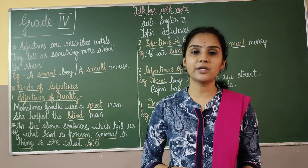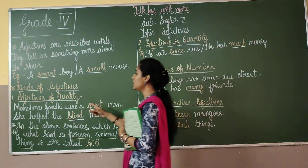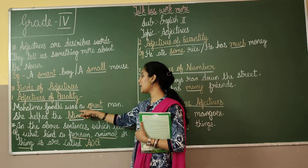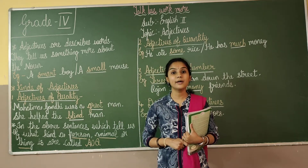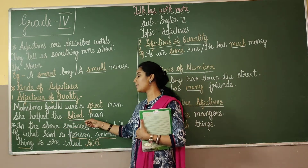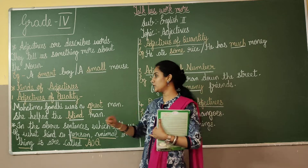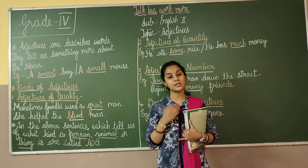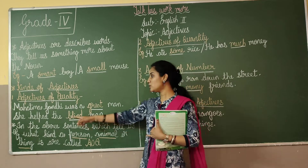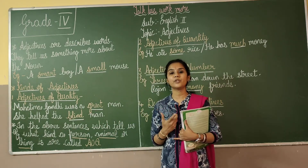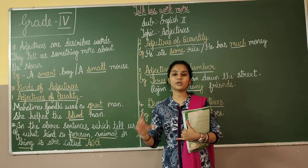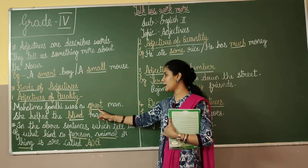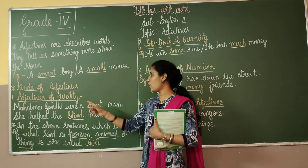The first one is adjectives of quality. What do you mean by adjective of quality? For example: Mahatma Gandhi was a great man. How was Mahatma Gandhi? He was a great man. She helped the blind man — how was the man? The man is blind. So here Mahatma Gandhi was a great man, and blind describes the other man. Great and blind are adjectives of quality.